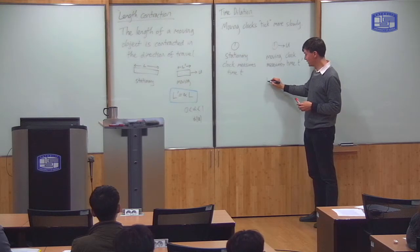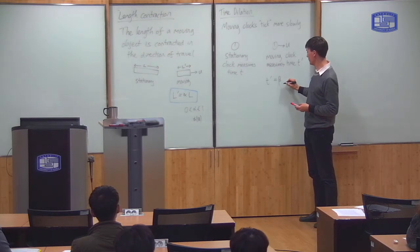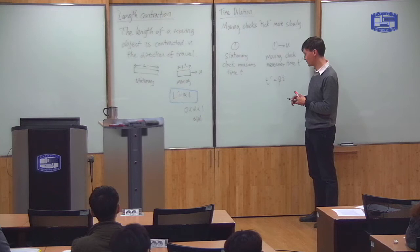So it will measure an amount of time T prime. And again I can write down a formula. T prime is less than T, so T prime is equal to some factor beta times T.